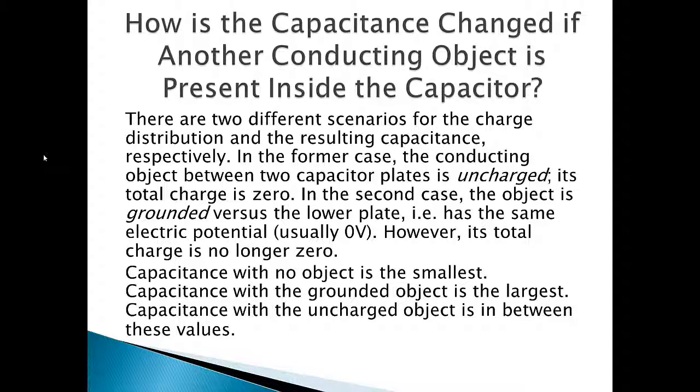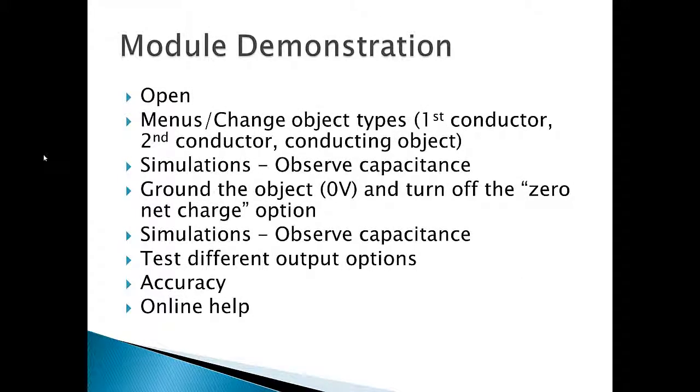Two scenarios are possible for the charge distribution and capacitance. In the first, the conducting object between two capacitor plates is uncharged. Its total charge is zero. In the second case, the object is grounded versus the lower plate. However, its total charge is no longer zero.